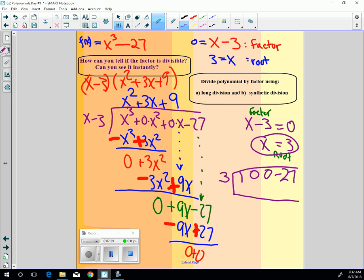So now all we do is drop the 1. 1 times 3 is 3. Add these up, 3. Multiply 3 times 3. Oh, this is interesting. And then add these up, you get 9. Multiply these, 27. Add these and get 0.